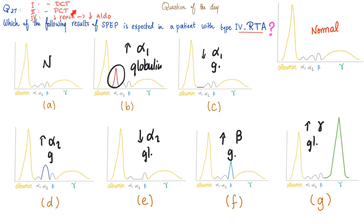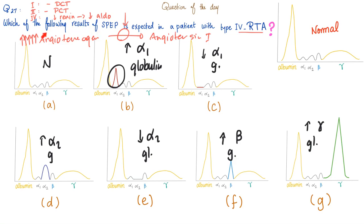What was the normal function of renin? Renin converts angiotensinogen into angiotensin 1. But in type 4, there is low renin, so there is low conversion of angiotensinogen to angiotensin 1. Therefore, the level of angiotensinogen will increase in the serum. Angiotensinogen comes from the liver — it's a plasma protein, specifically a globulin. Is it alpha globulin, beta, or gamma? It's an alpha globulin — specifically alpha-2 globulin. So increased angiotensinogen equals increased alpha-2 globulin, making the answer choice D.